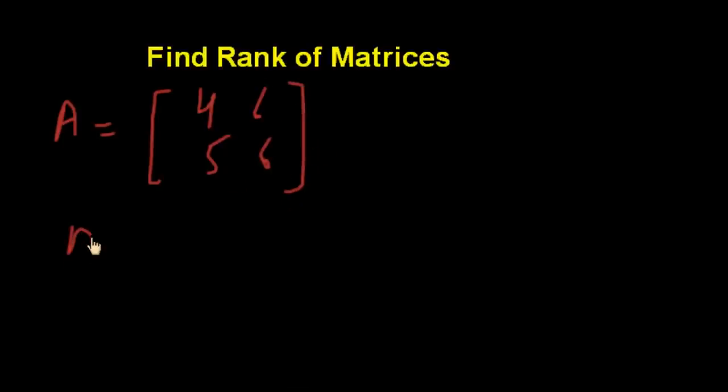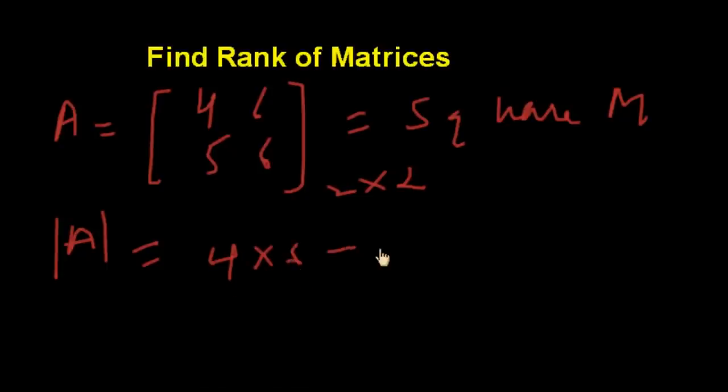When we determine this, this is a square matrix. The matrix and its order is 2 by 2, and its determinant is 4 times 6 minus 6 times 5.